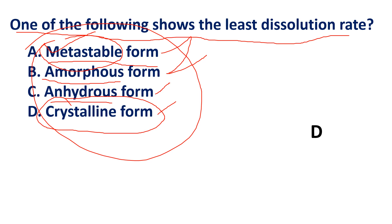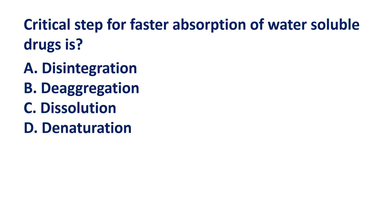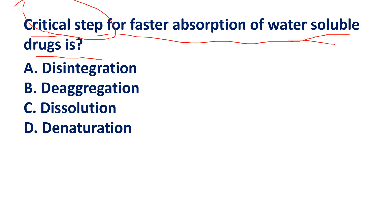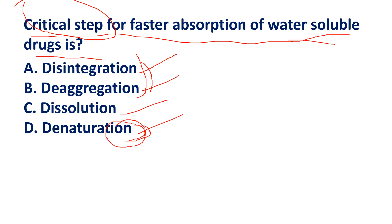Next question: For faster absorption of water-soluble drugs, which step is critical? The process involves disintegration, de-aggregation, dissolution, and absorption. For water-soluble drugs, dissolution is the critical rate-limiting step, so the answer is C.